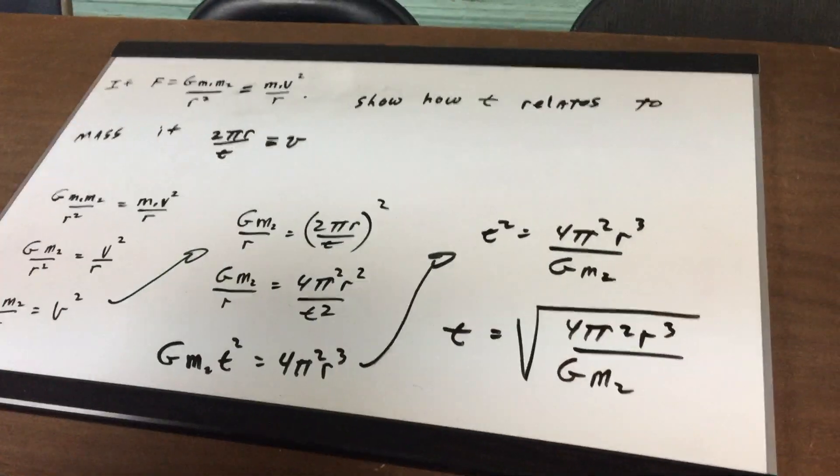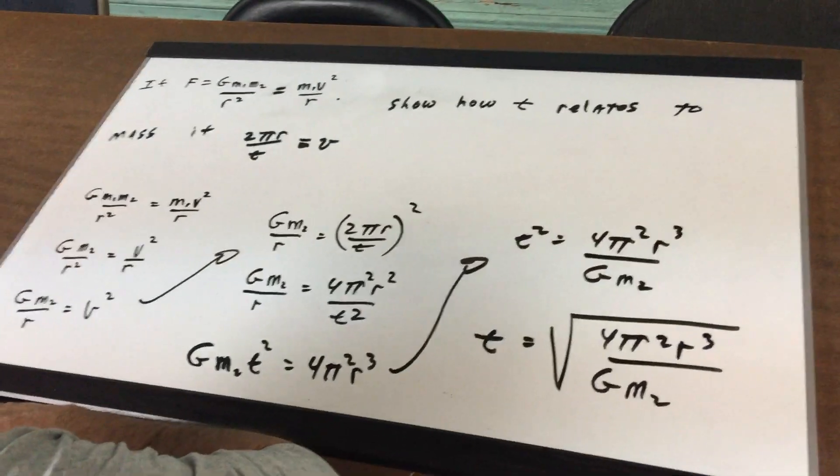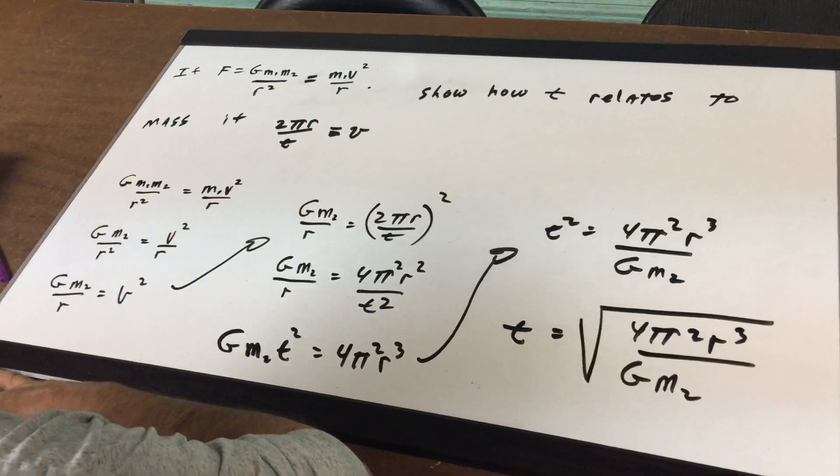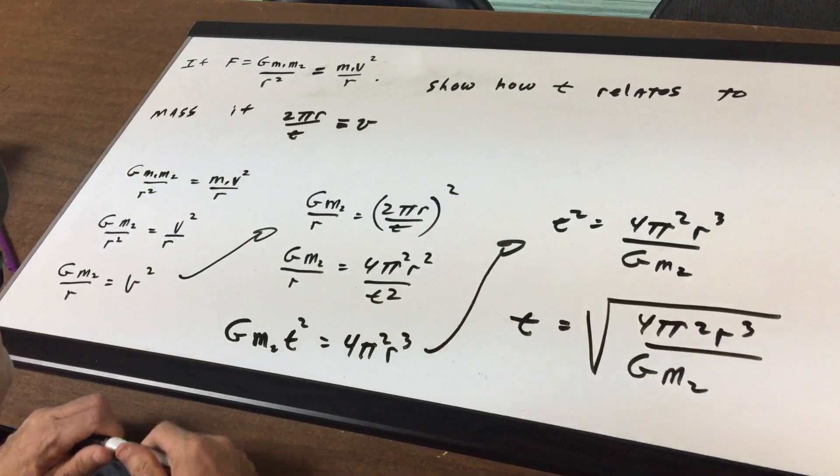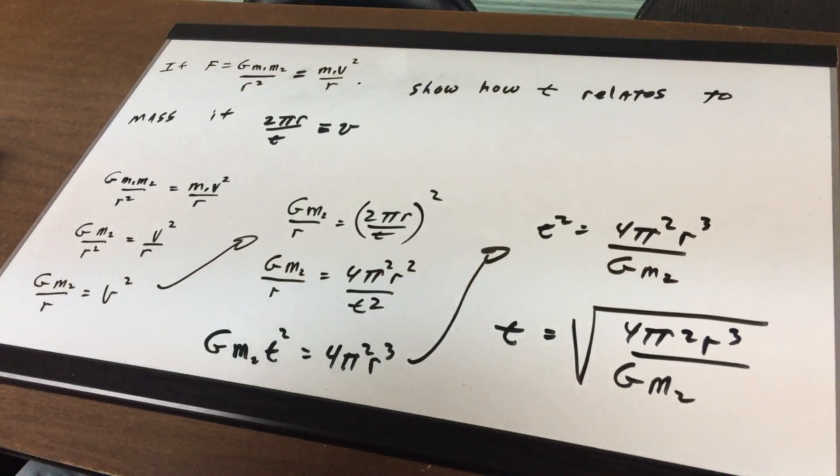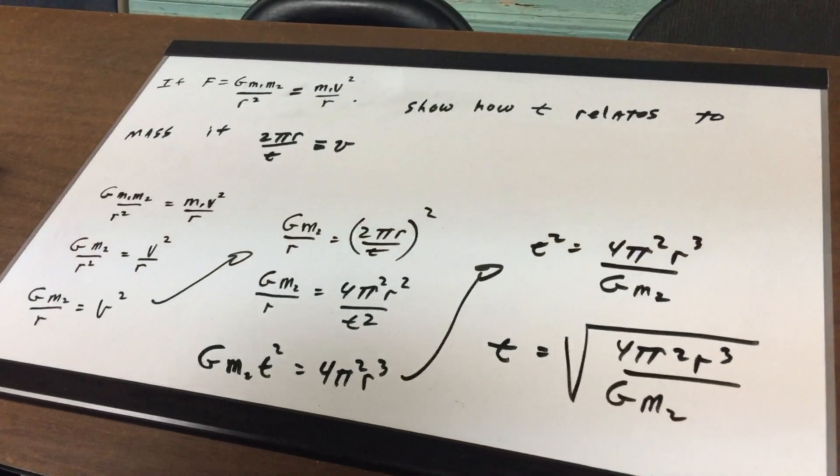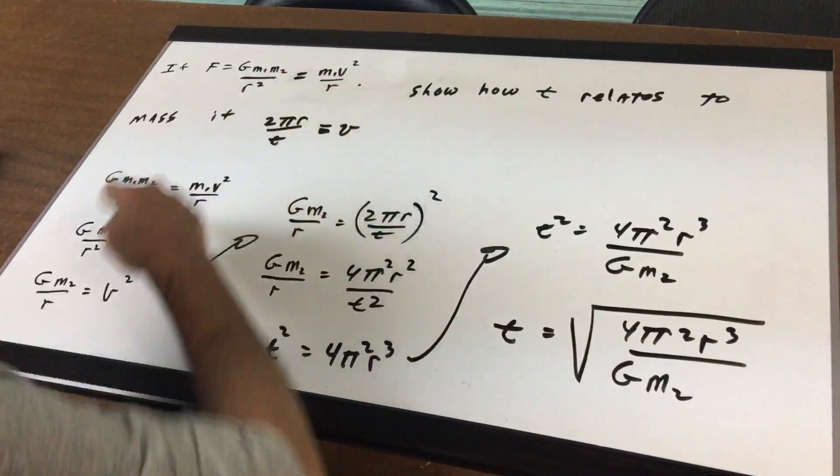I say to you that force is equal to g m1 m2 divided by r squared and also equal to mv squared r. You might recognize this from physics. If you took physics, I am setting the gravitational force equal to the centripetal force.